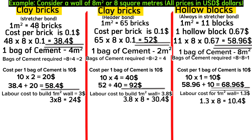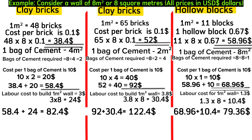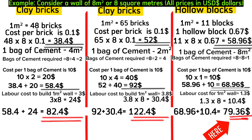Adding labor and material costs together, the total for eight square meters is $82.40 for bricks in stretcher bond, $122.40 for bricks in header bond, and $79.36 for hollow blocks. Hollow blocks are the least expensive overall option.